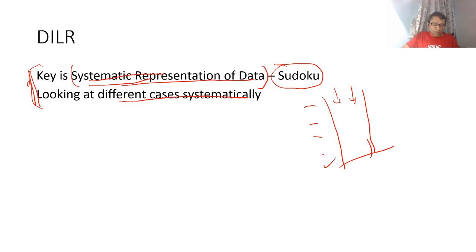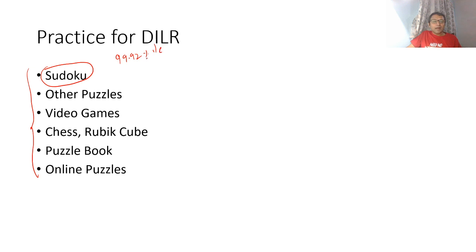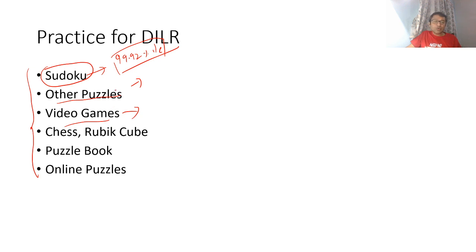That's the reason Sudoku becomes important - if you don't understand the data properly you'll find it difficult to solve. Sudoku is definitely recommended; a lot of people who practice Sudoku have done well. I have a student who scored 99.92 percentile in CAT and he likes to solve Sudoku. Other puzzles like Hitori, Kakuro etc. also help. Video games also - I've known people who scored 99.99 in DLR playing video games.